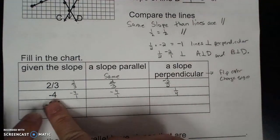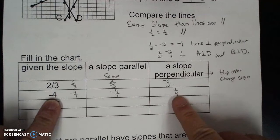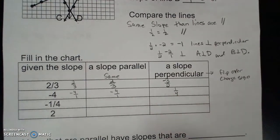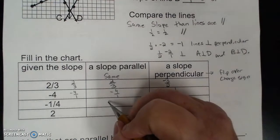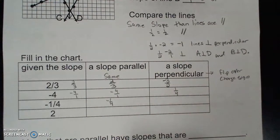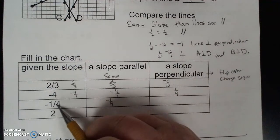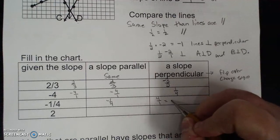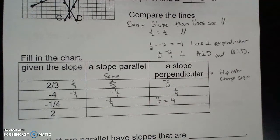If you multiply the slope and the perpendicular slope, it has to equal negative 1. If I have negative 1 fourth, the parallel slope is negative 1 fourth because it's the same. To get the perpendicular slope, use the opposite reciprocal and simplify your fraction.